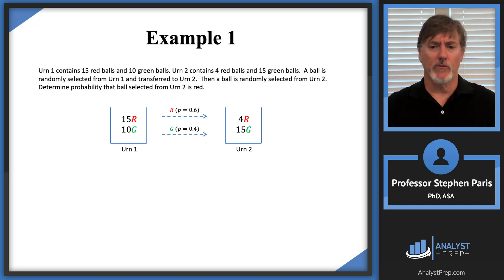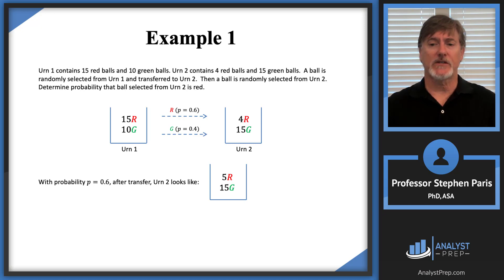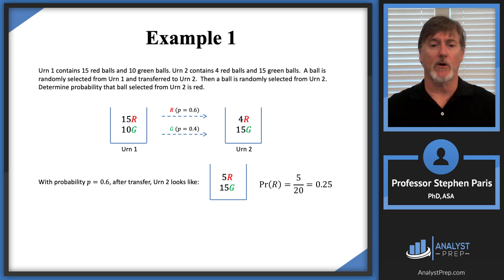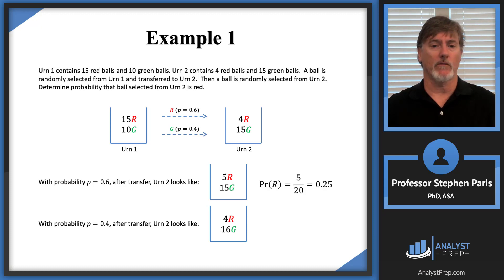With probability 0.6, urn 2 is going to have 5 red balls and 15 green balls, because a red ball was added. So with probability 0.6, the probability of selecting a red ball from urn 2 would be 5 out of 20, which is 1/4 or 0.25. Similarly, with probability 0.4, urn 2 would have 4 red balls and 16 green balls — a green ball was transferred over — so the probability of selecting a red ball from urn 2 would be 4 out of 20, or 0.2.